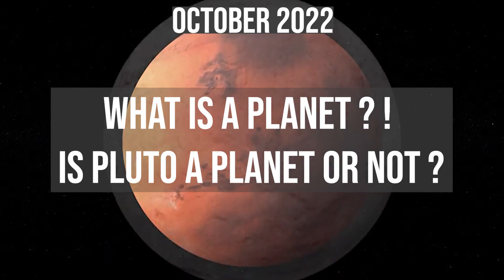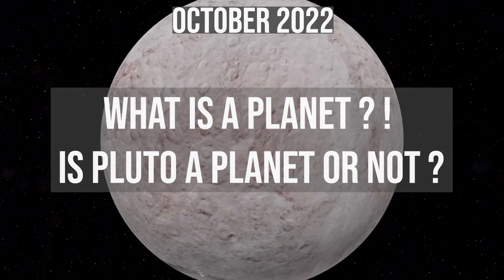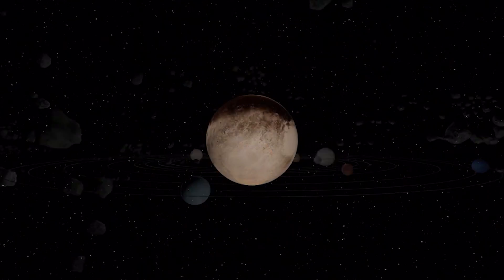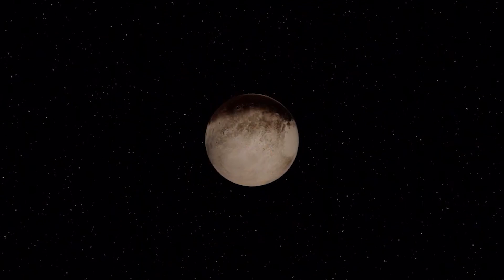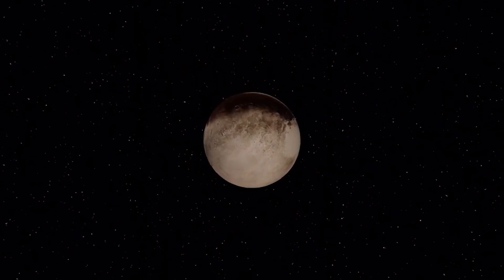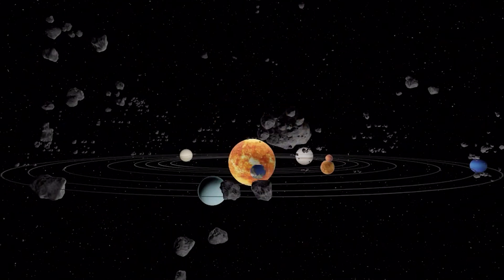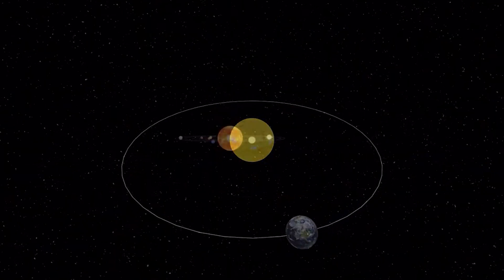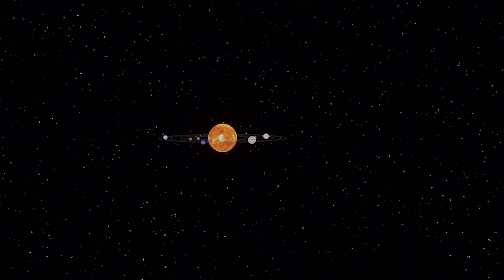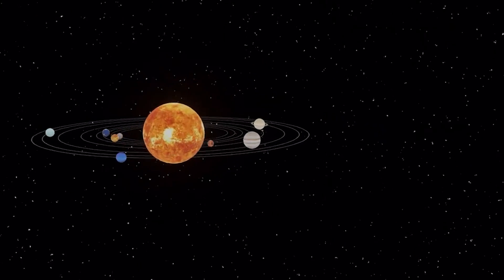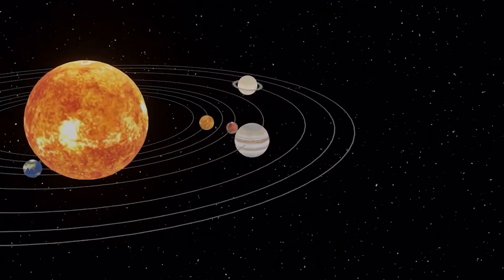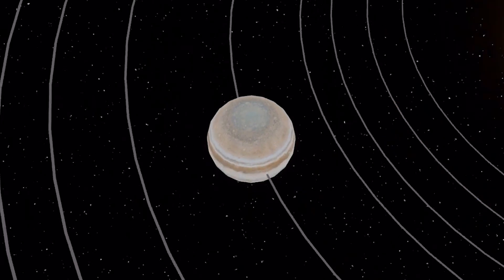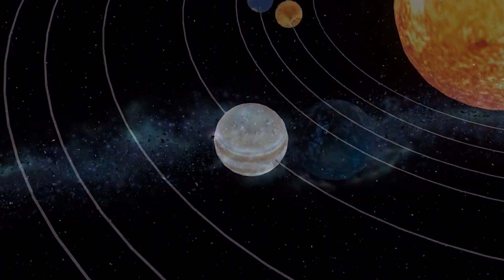The difference between a planet and a dwarf planet is the kinds of objects that share its orbit around the Sun. Pluto has not cleared its orbit of similar-sized objects, while Earth and Jupiter have no similar-sized worlds on the same path around the Sun. Like planets, dwarf planets are generally round and orbit the Sun.